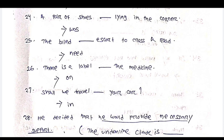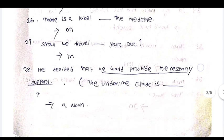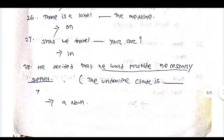Shall we travel dash your car — in your car. He decided that he would provide necessary support. The underlined clause is dash — this is a noun clause.